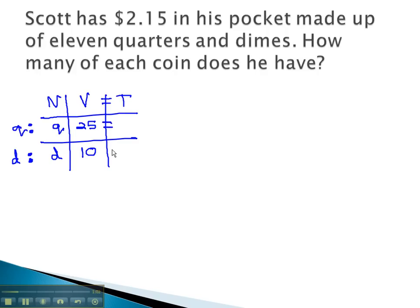To get the total value, we multiply these together. Quarters times 25 is 25q. Dimes times 10 is 10d.